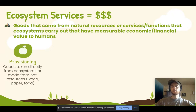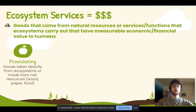The first category is the easiest to remember and that's provisioning. These are goods taken directly from ecosystems or products that are made using natural resources. Apples, fish or animals that you hunt from a forest, wood, paper — these are all great examples of provisioning ecosystem services.